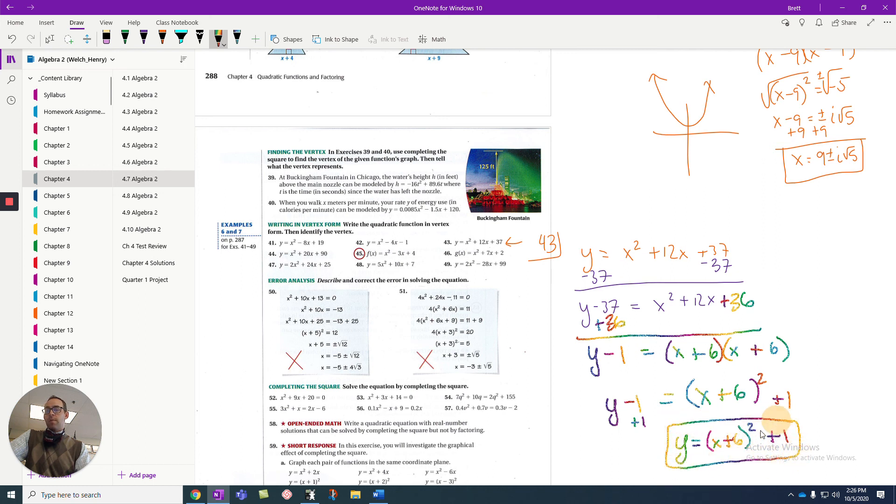That is the vertex form of the equation that we started with. Which is great, because then I can find the vertex. And the vertex is the opposite of what's grouped with x. And then whatever number is added or subtracted at the end, just the way it is. There's my vertex, negative 6, 1.